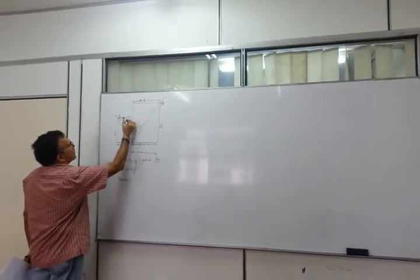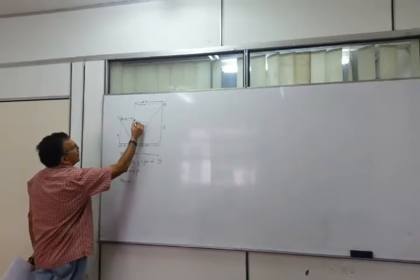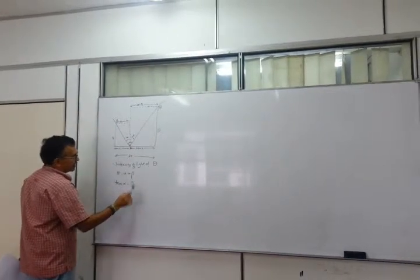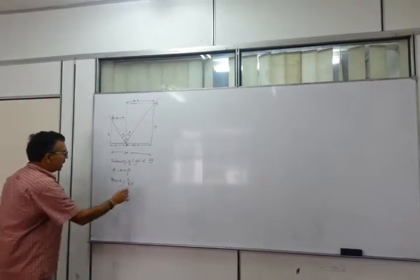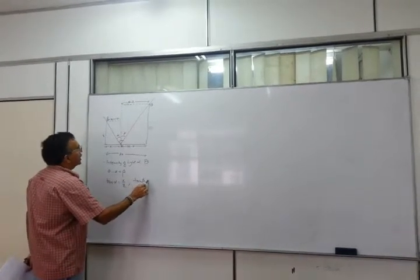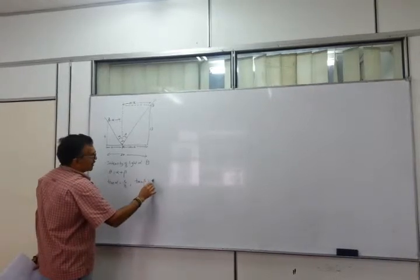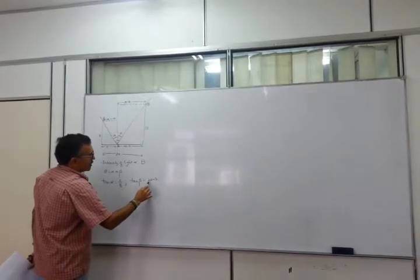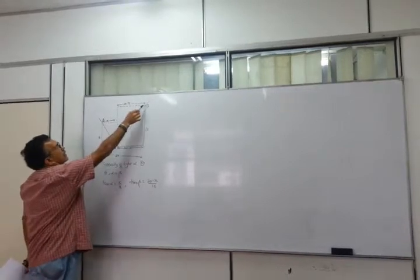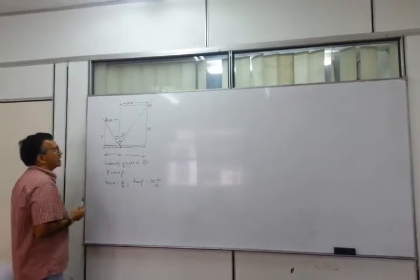Tan alpha is your opposite over your adjacent. Is that good? Yeah. And let's also write theta beta, which is 3 over 30, opposite over your adjacent. Is that good? Yeah.